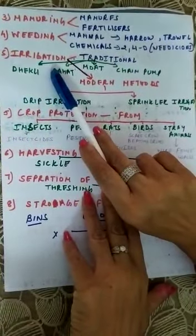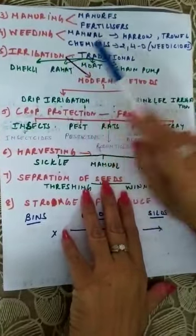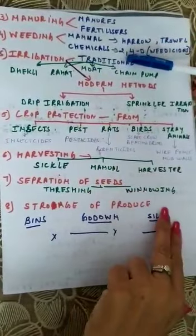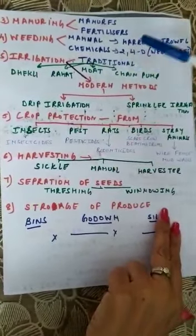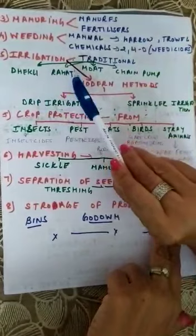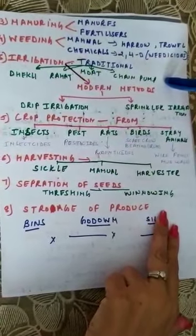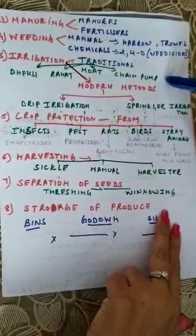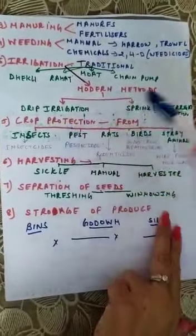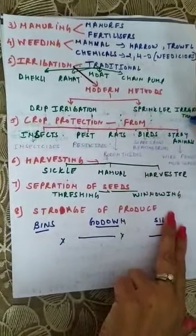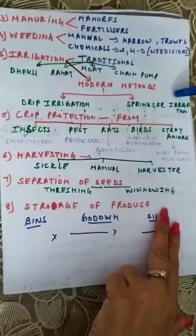The fifth practice is irrigation. There are two methods of irrigation: traditional method and modern method. In the traditional method, dhekli, rahat, moat, and chain pumps are used to irrigate the field. In modern methods, drip irrigation and sprinkler irrigation are the two methods.